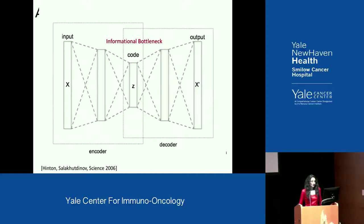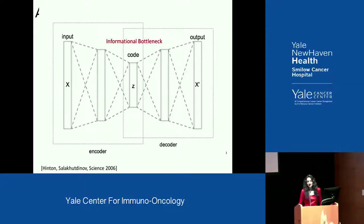Another way to learn manifolds is through neural networks. People often think of neural networks as classifying or as black-box models automating what a human or pathologist already does. We use it differently. There's a type of neural network called an autoencoder, which has the goal of recreating its input at the output. It can't quite do this perfectly because it has an informational bottleneck, and this bottleneck learns the same kinds of intrinsic manifold dimensions.